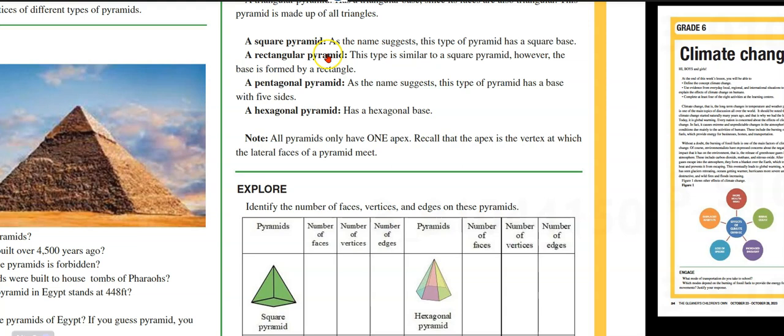A square pyramid. As the name suggests, this type of pyramid has a square base. The base is formed by a rectangle.